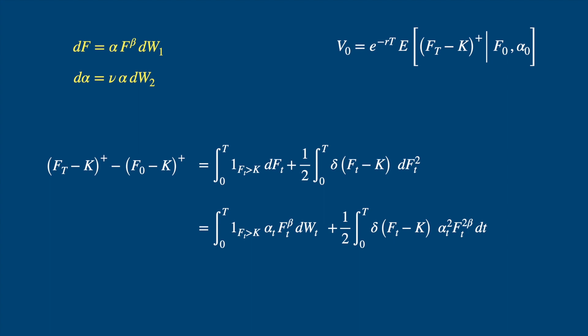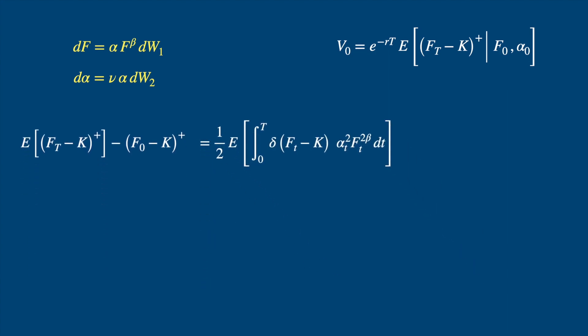We take expected values of both sides. Notice this will now be conditional on the values of the two processes, f naught and alpha naught. Then the expected value of the first integral, as before, is equal to 0, and in the second we just take 1 divided by 2 out of the expectation. And now noting that the presence of the Dirac function means that the integrand only contributes when f is equal to k. So as before, we can replace f by k, and because it's a constant, we can take it out of the integral as well. We then interchange this expectation and the integral. So the expectation moves inside the integral.